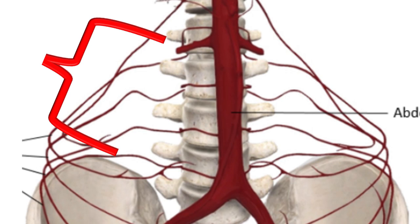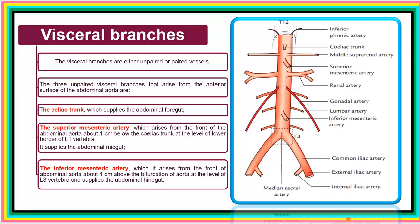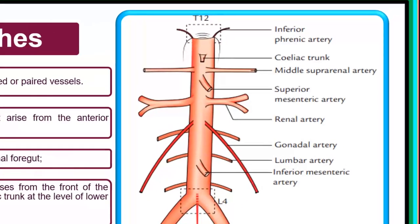The lumbar arteries arise posteriorly and will not be easily seen on most anatomical prosections. There are three single visceral branches: the celiac trunk supplies the abdominal foregut; the superior mesenteric artery arises from the front of the abdominal aorta about 1 cm below the celiac trunk at the level of the lower border of L1 vertebra and supplies the abdominal midgut; the inferior mesenteric arises from the front of the aorta about 4 cm above its bifurcation at the level of L3 vertebra and supplies the abdominal hindgut. So: celiac trunk at T12, superior mesenteric at L1, inferior mesenteric at L3.